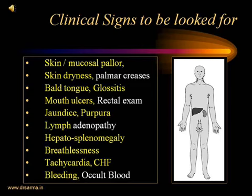Severe anemic patients will have signs of congestive heart failure. Remember, beyond all these things, the most important thing is bleeding — is there any source of bleeding in this patient? If there is no overt bleeding, we must look for occult blood. Occult blood test is done on the stool sample using benzidine reagent. Remember: when we ask for occult blood, the patient should not be taking any meat or meat products or non-vegetarian food for at least 48 hours. Otherwise, a positive result is likely to occur even in a normal person.